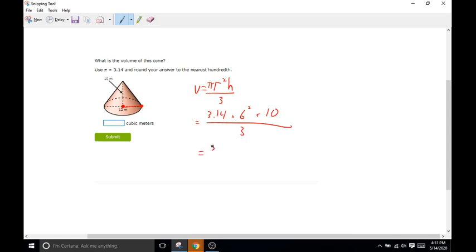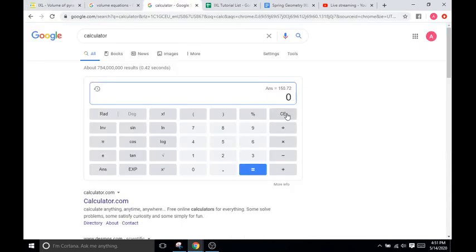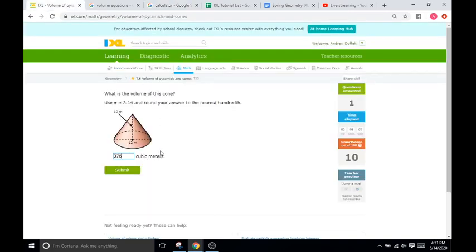This is going to be equal to 3.14 times 6 squared, or 6 times 6 is 36. And then 36 times 10 is 360, and then divided by 3. I'm going to simplify this down and do 3.14 times, 360 divided by 3 is going to be 120. So we just need pi times 120. Go to our calculator and do 120 times 3.14. And that's 376.8. So 376.8.